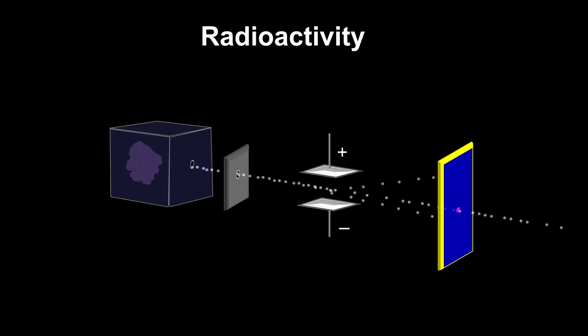One is deflected upward by the electric field, indicating that it is negatively charged. These were named beta rays.